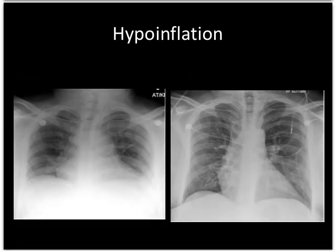Just to show you how profound the effects of hypoinflation can be: the patient on the left has taken a very low inspiration — you can see how wide the mediastinum looks and how crowded the vascular markings are, making it really difficult to see subtle abnormalities. The same patient on the right was imaged the next day with good inflation. Both of these are totally normal chest X-rays, but you can see that they look dramatically different.